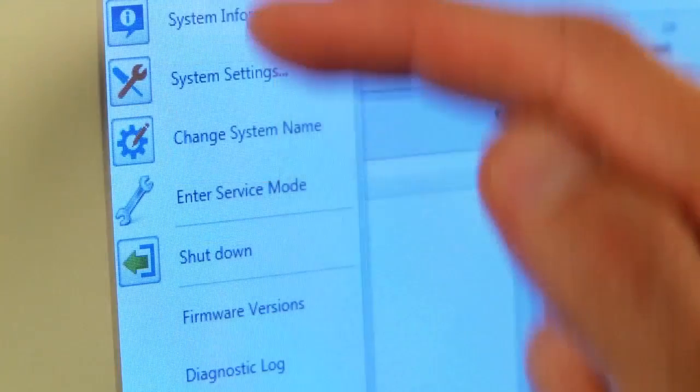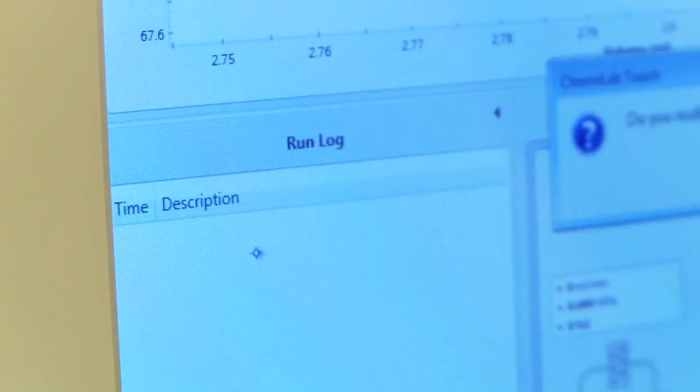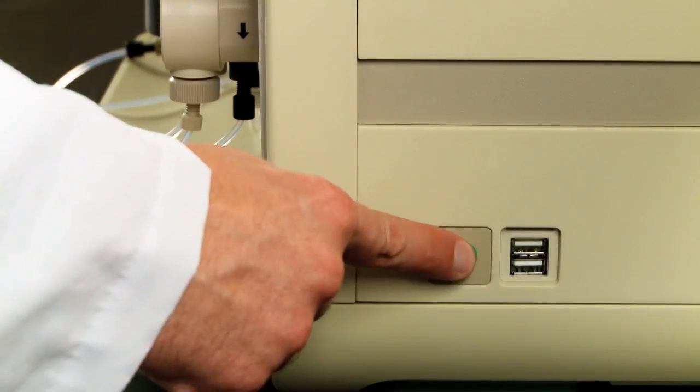Shut down the NGC instrument using either the Chrome Lab menu on the touch screen or the power button located on the side of the instrument.